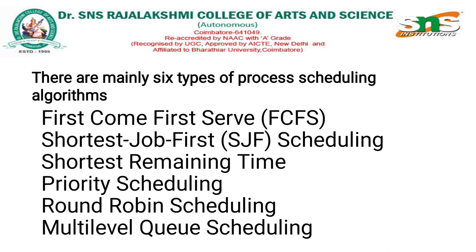In Round Robin Scheduling, there exists a queue. In this queue, the process will wait for the processor. Once the process occupies the processor on the basis of time slots, and once the time slot is completed but the process does not complete its job, then it needs to wait back in the queue. That is Round Robin Scheduling.